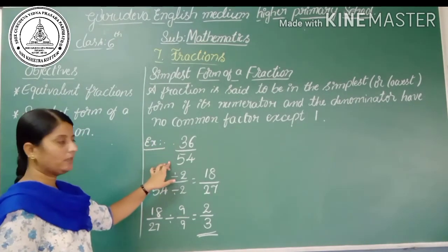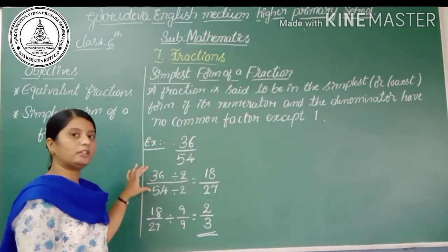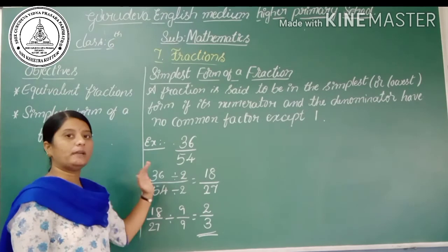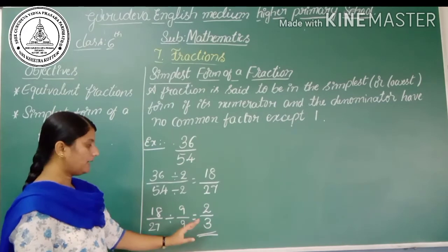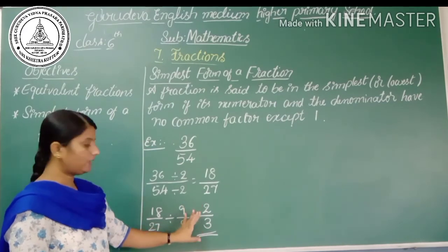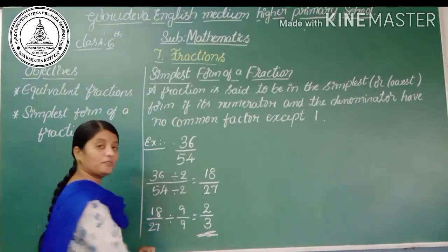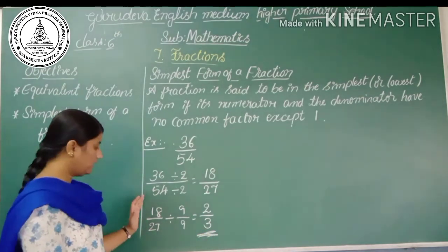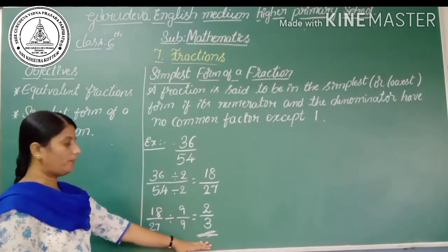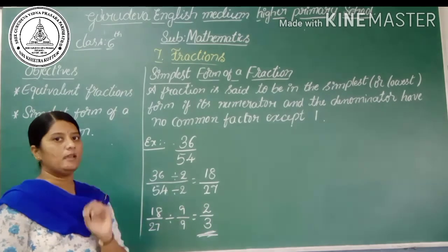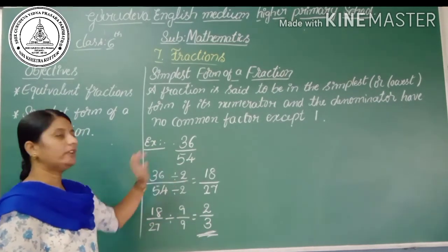To summarize: to find the simplest form of a fraction, we divide the numerator and denominator by the same number repeatedly until the numerator and denominator have only 1 as a common factor. At that point, we have reached the lowest form of the given fraction.